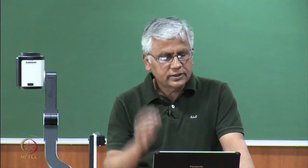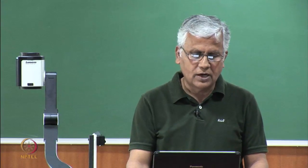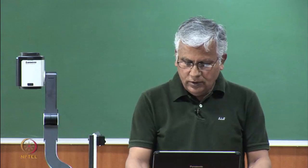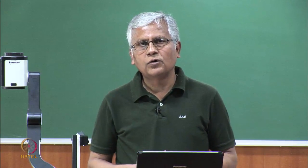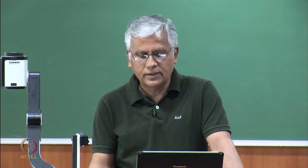Now the question comes: why do you need these objectives? What is the purpose? If we go to the very first objective — individualization of fibre tufts — this is required mainly to produce a very uniform yarn. The more the fibres are separated and open out, the more uniform the yarn would be. We have to make sure that there are no clusters of fibre present in the final yarn.